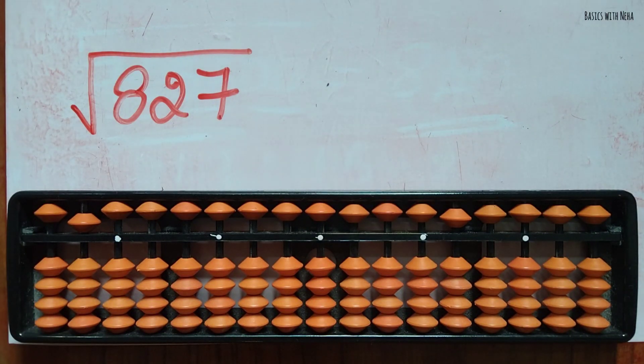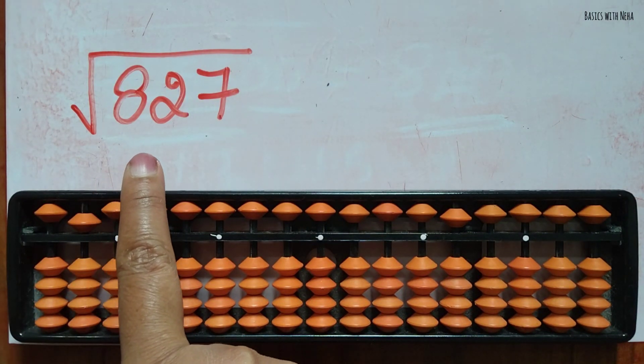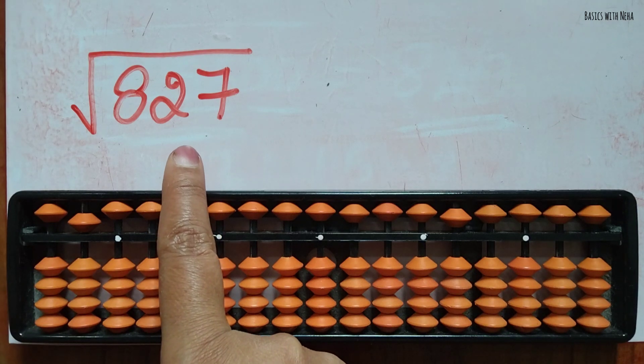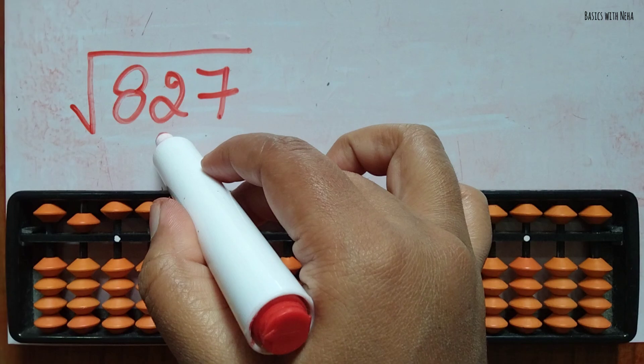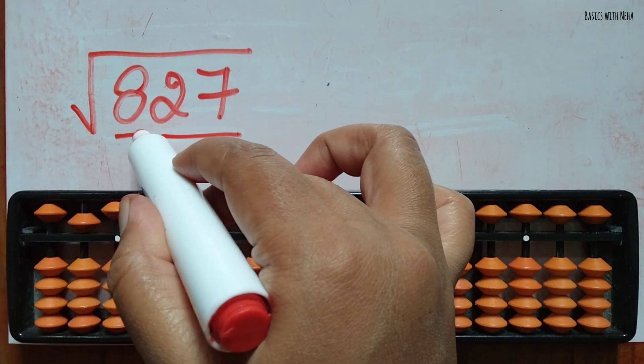Hello, welcome back to my YouTube channel. Square root of 827. First thing we should do is group the number into two from the right side, so it will be 27 and it will be 8.